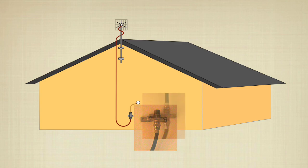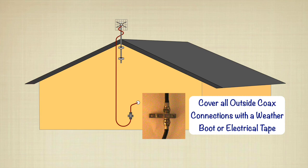Then run another coax cable from the other end of the ground block to inside the home. Don't forget to protect all outside coax connections with a rubber boot or electrical tape.